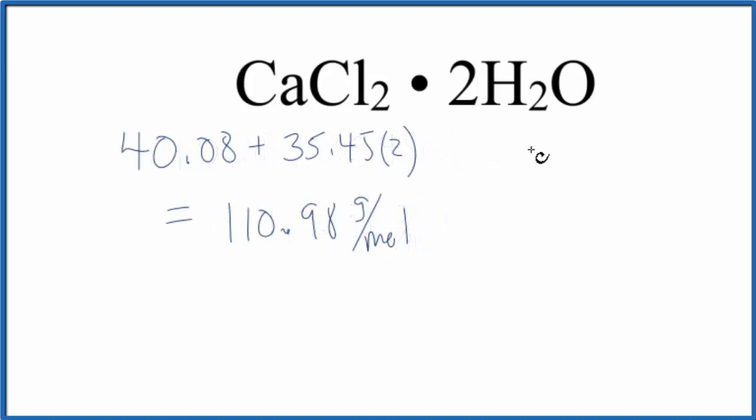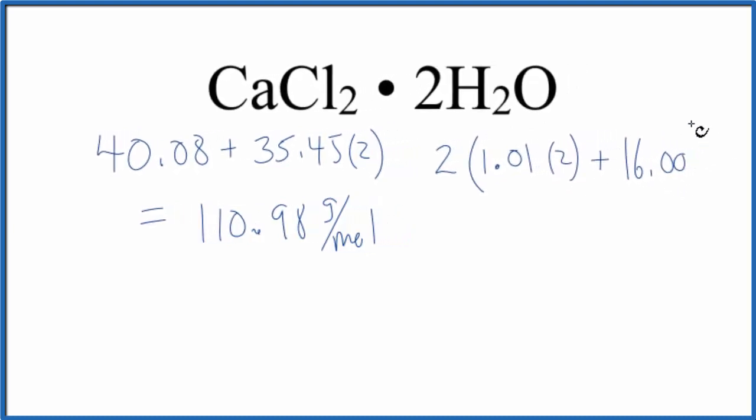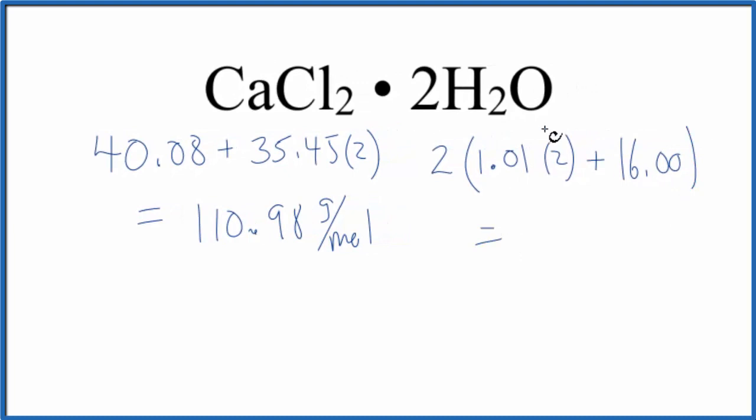For the two water molecules, we're going to multiply two times hydrogen. Each hydrogen atom has an atomic mass of 1.01. We have two of them, plus oxygen, 16.00. So we add those up, multiply, add them up, and we get 36.04 grams per mole.